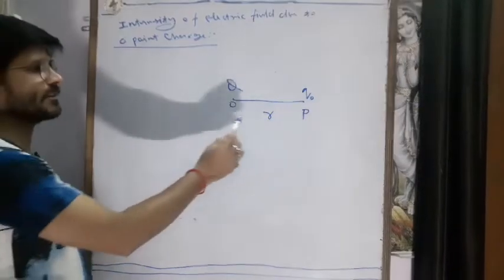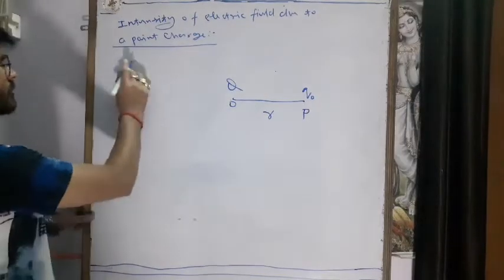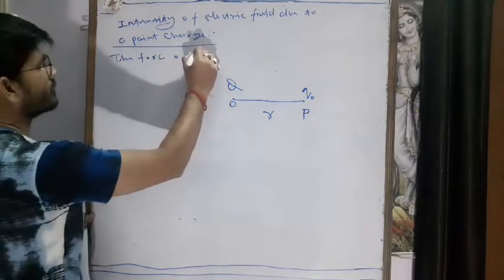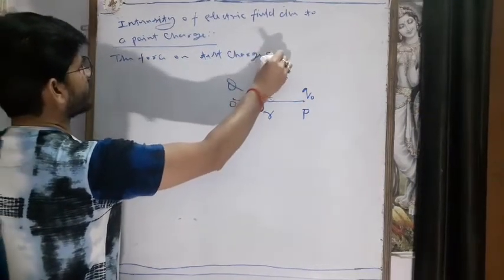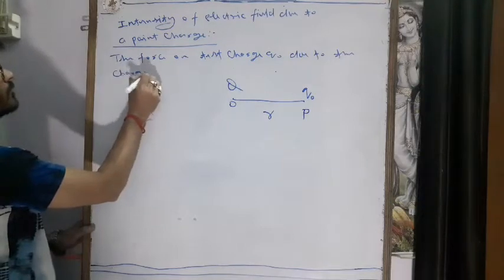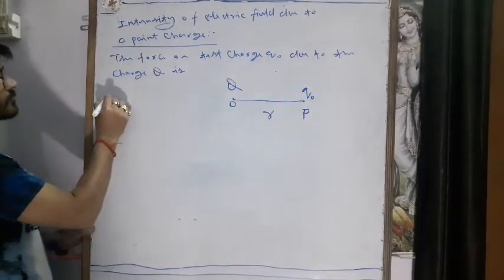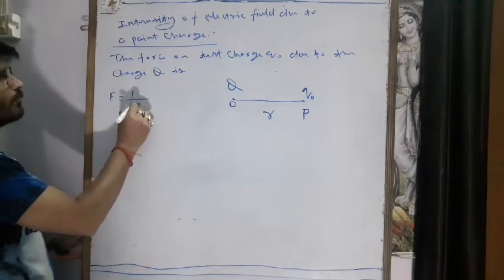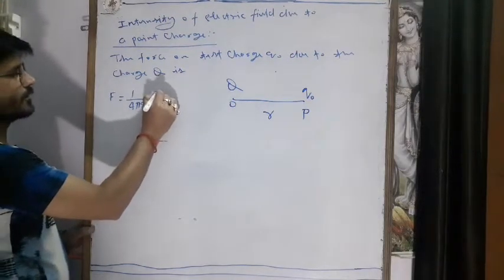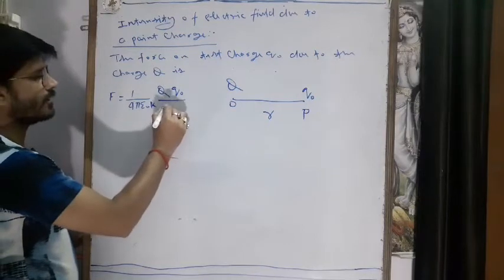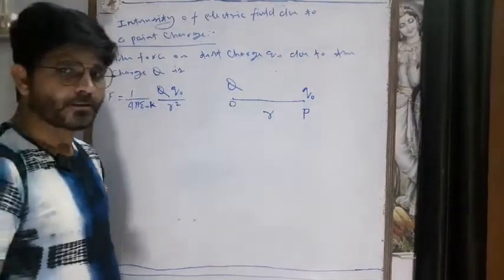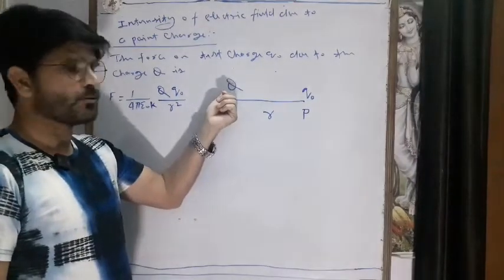Let me calculate the force acting on the test charge q naught due to the charge Q. The force on test charge q naught due to charge Q is: F equals 1 upon 4π epsilon naught — and if the charge is in a medium, we include the dielectric constant k — times Q (as q1) times q naught (as q2), divided by r squared. This is the force between the two charges Q and q naught — the force exerted by charge Q on charge q naught.